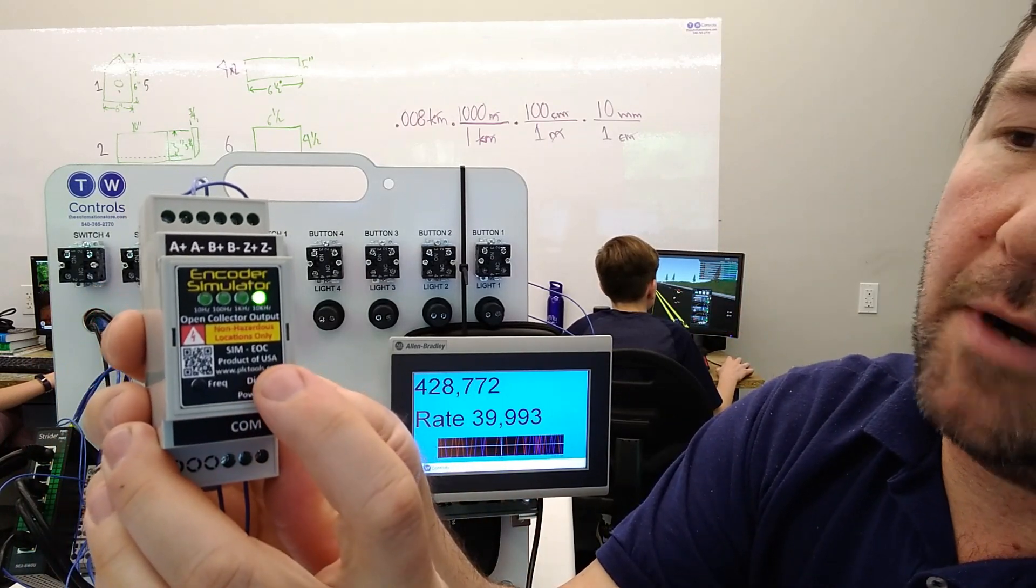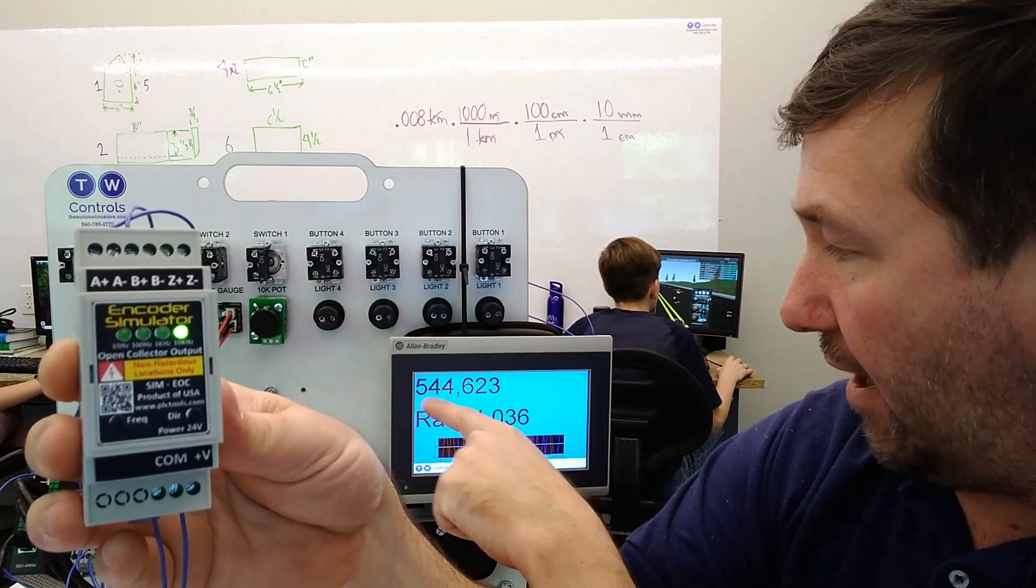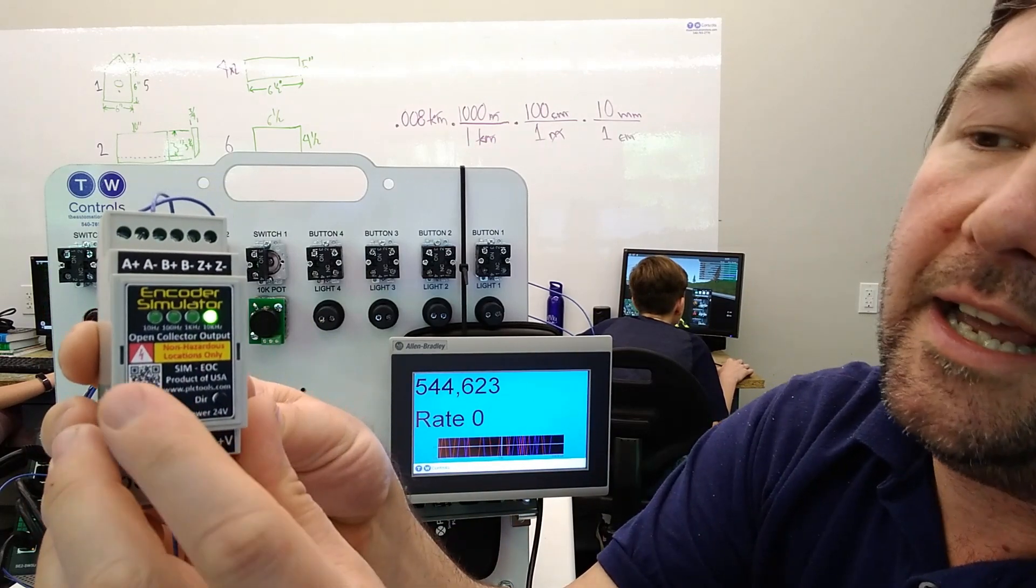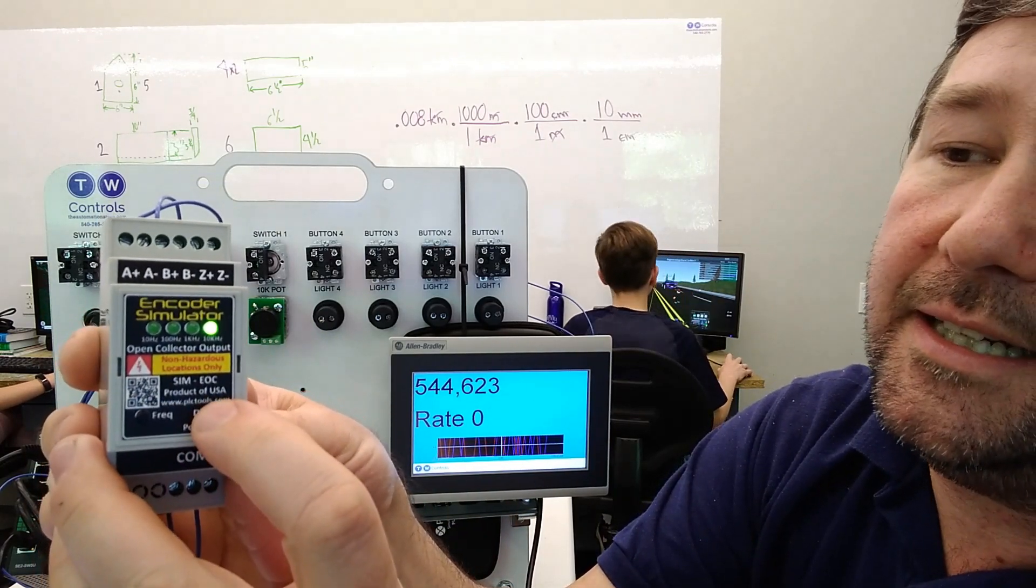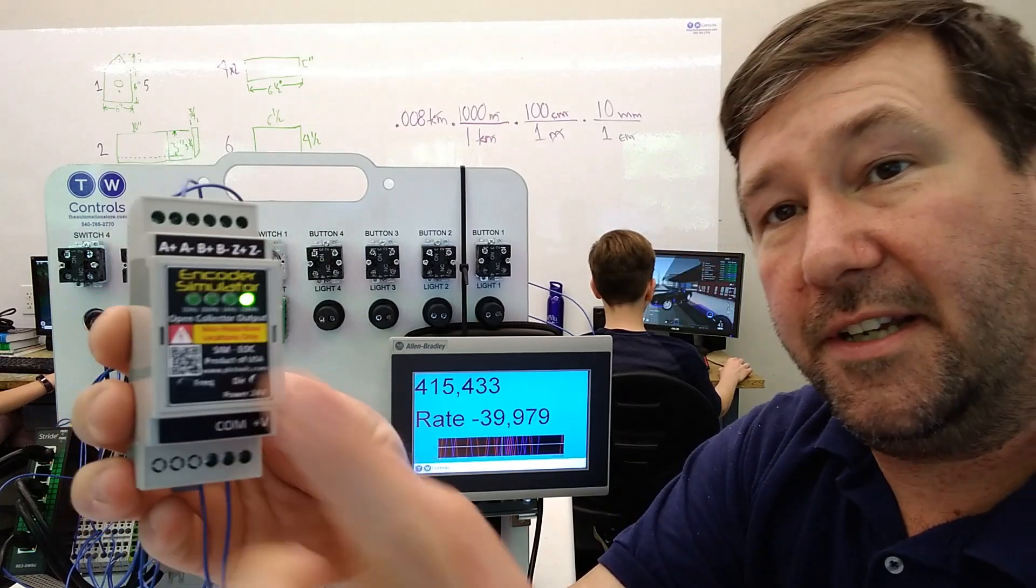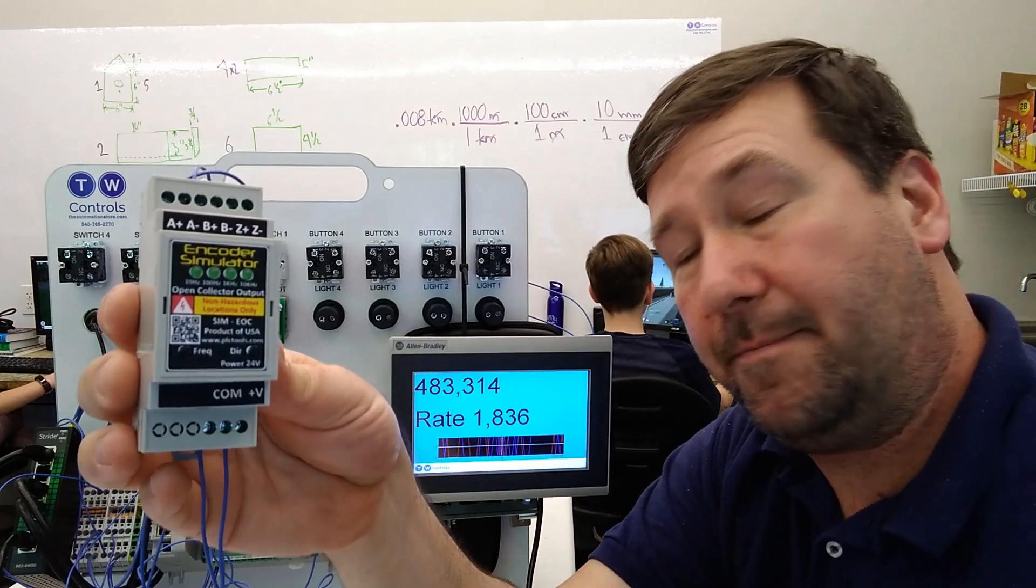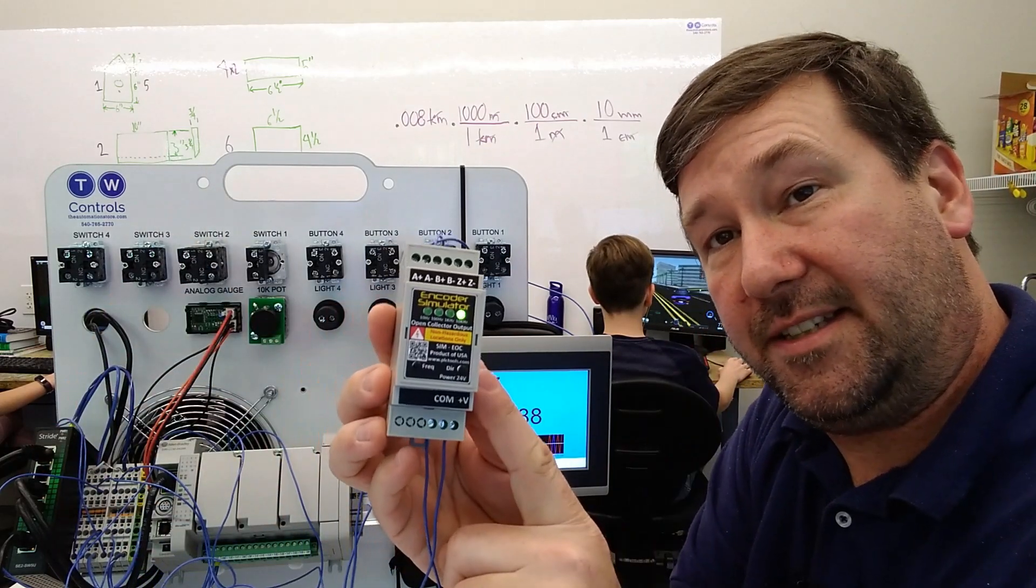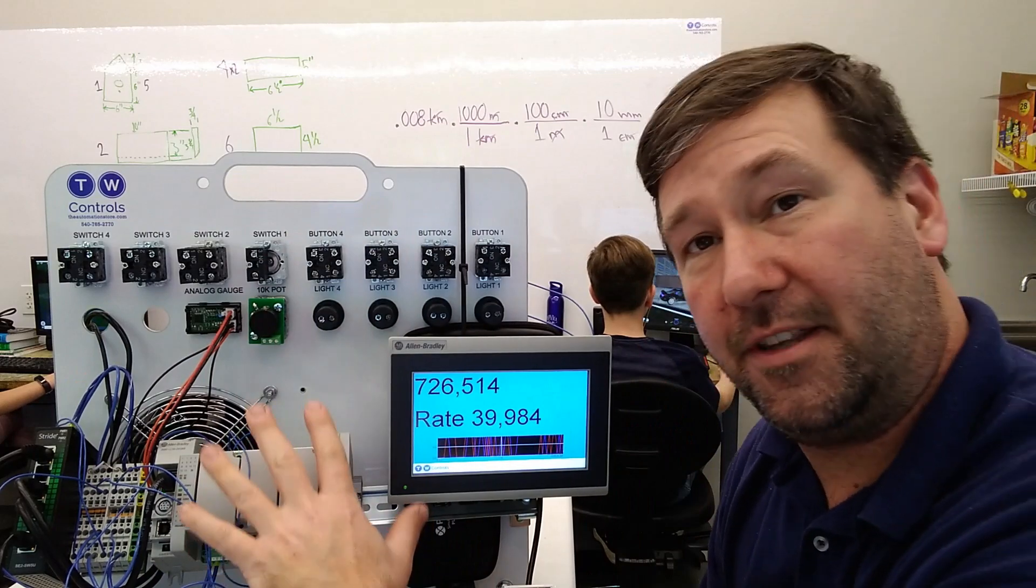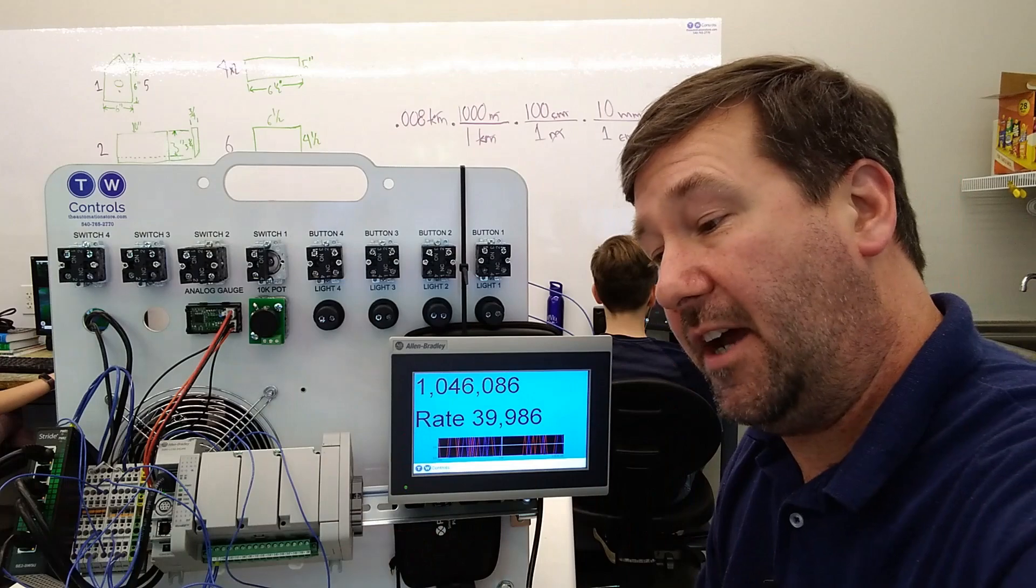And at any time we can press the direction button. If we're going forward and we press it, it's going to stop. You can see our rate went to zero and our position is frozen. And we can press it again and we'll start going reverse. Press it again forward and you can switch frequency at any time. So I'll put a link to this down in the description along with a link on how to configure the high speed counter in the micro 850 and how to understand the signals that are actually coming out of your encoder.